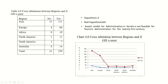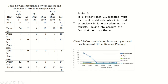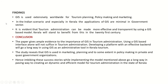Cross-tabulation between regions and usefulness of GIS in itinerary planning is also shown. Findings of the study: GIS is used extensively worldwide for tourism planning, policy making, and marketing. In the Indian scenario, especially in Kerala, applications of GIS are minimal in the government sector. It is evident that tourism administration can be made more effective and transparent by using a GIS-based model.